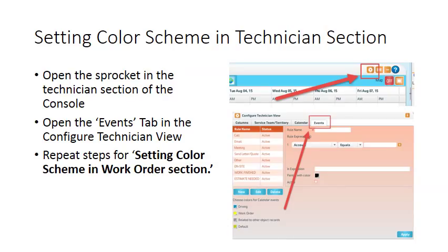Next, we will review the process for setting color schemes in the Technician section of the console. Open the sprocket in the Technician section of the console and open the Events tab in the Configure Technician view. Repeat the steps for setting color scheme in the Work Order section.